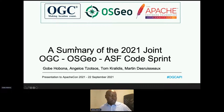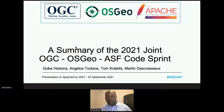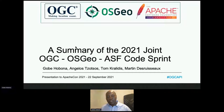Hello everyone, thanks very much for attending this presentation. My name is Gobe Obana, I work for the Open Geospatial Consortium, also known as the OGC, and I'm going to speak to you about the 2021 joint OGC OSGeo ASF code sprint — that's the Open Geospatial Consortium, Open Source Geospatial Foundation, and Apache Software Foundation joint code sprint. The presentation has been prepared in conjunction with colleagues Angelos Tsosos from OSGeo, Tom Kralidis also from OSGeo, and Martin Does from the geospatial part of the Apache Software Foundation.